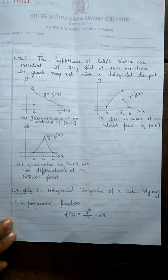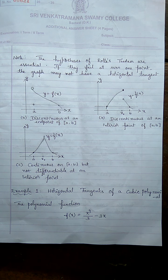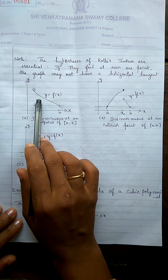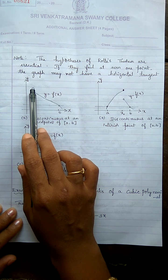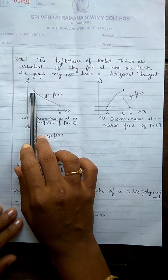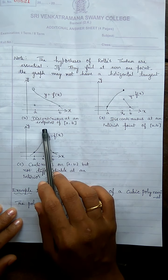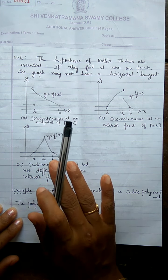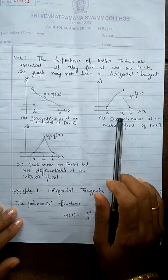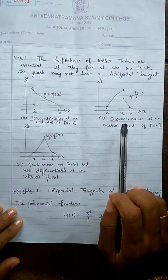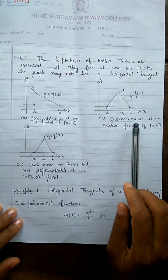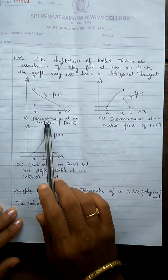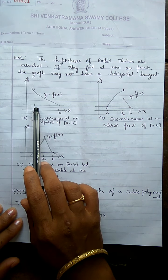Consider a function y = f(x). If this function is discontinuous at one point — specifically discontinuous at an endpoint of [a, b] — then this graph has no horizontal tangent. Similarly, observe that in this next graph, the function is discontinuous at an interior point of (a, b), and here the function is not continuous at endpoint a.